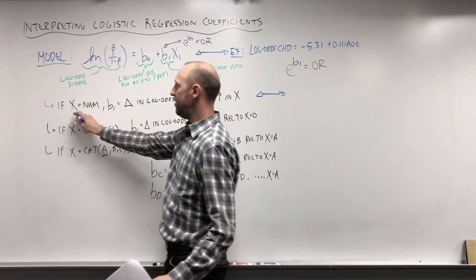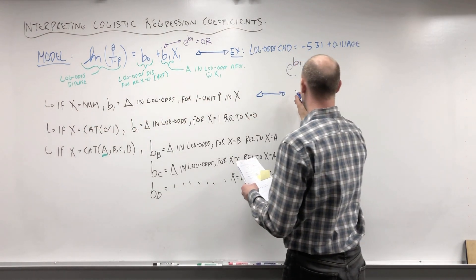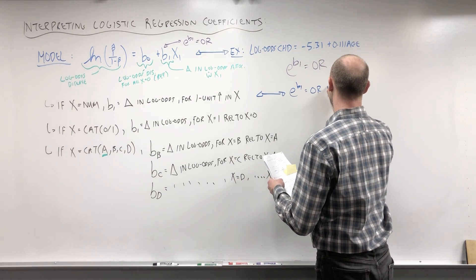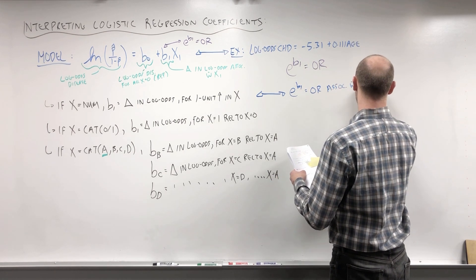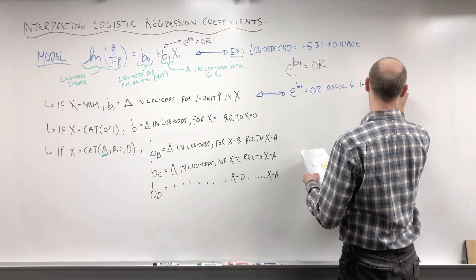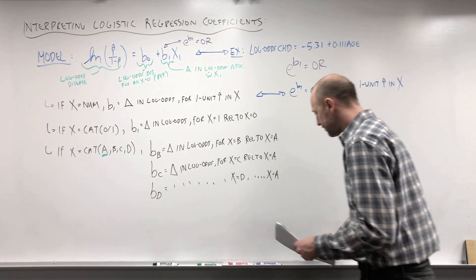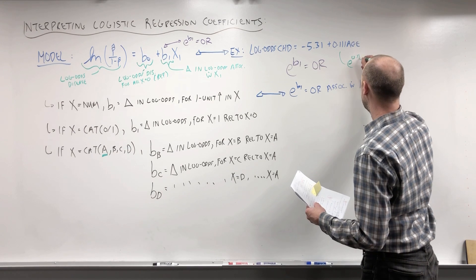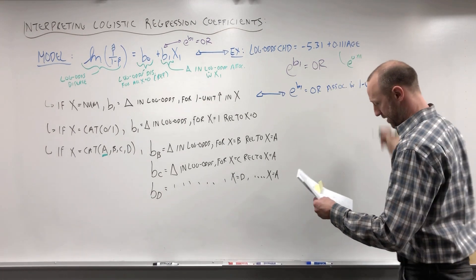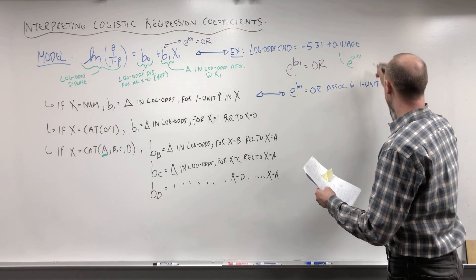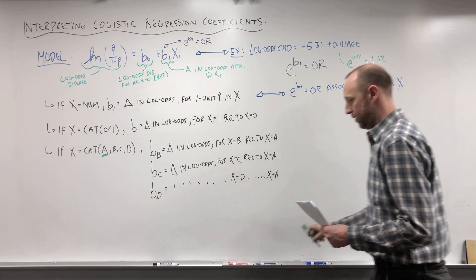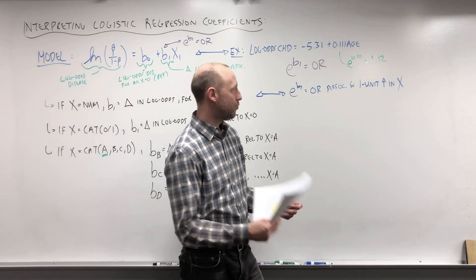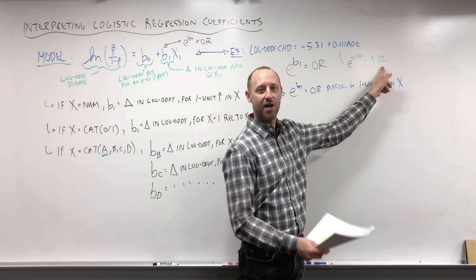If x is a numeric variable, exponentiating the coefficient gives us the odds ratio associated with a one-unit increase in x. If we exponentiate the coefficient 0.111 — the coefficient for age, which is numeric — we get 1.12. The interpretation: the odds of coronary heart disease for someone who is one year older are 1.12 times the odds of someone who is one year younger.